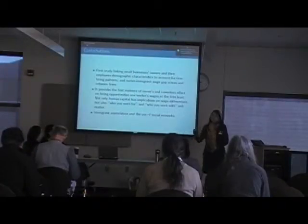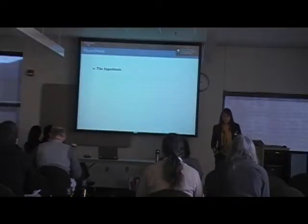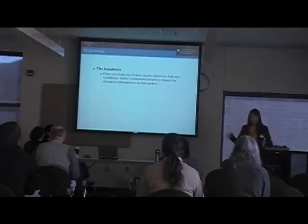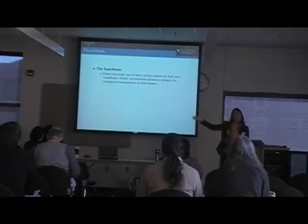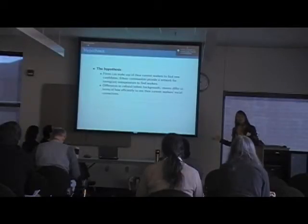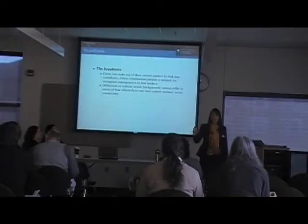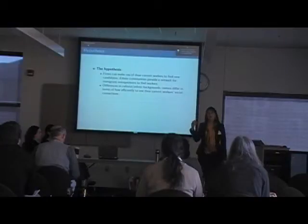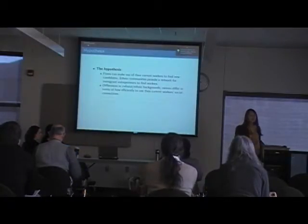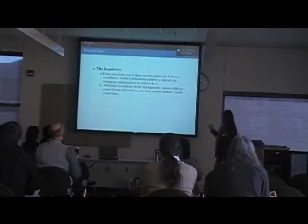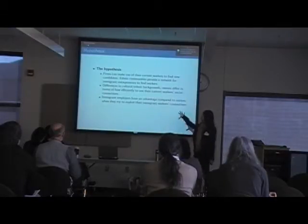There's some evidence about how immigration is working in some other sectors and especially the use of social networks. So the process I've been working on is that firms can use the current workers to find new workers. They use the social network of the current employees to find future employees and positive agencies. And how these owners can take advantage of their employees' social networks depends on their social background. Immigrant owners probably will know better how to use their immigrant workers' social networks. So employers should have this advantage compared to natives when they try to exploit immigrants' worker connections.